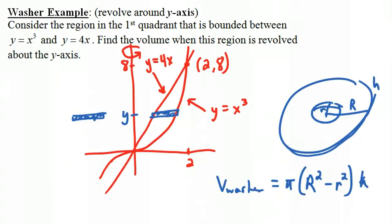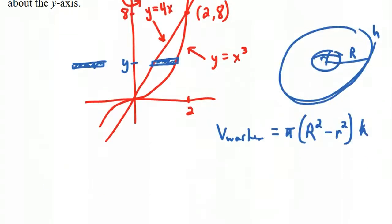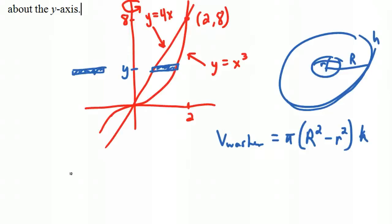Now what is the big R and what's the little r and what's the h for this example? Well, the h this time is going to be delta y. The big R, what is the big R? It's the distance from here to here. That's the big radius. The small radius is the distance from here to here.